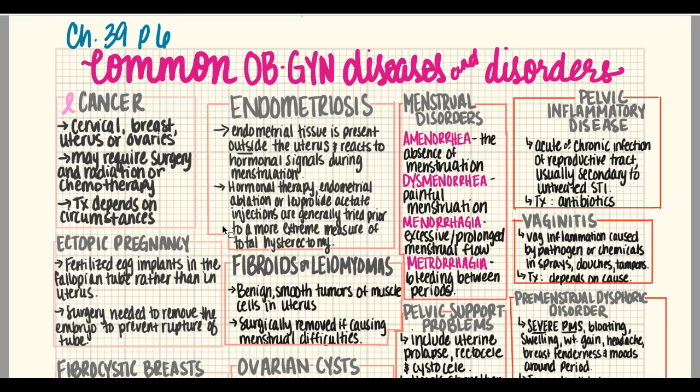Menstrual disorders include amenorrhea — the absence of menstruation, which can occur secondary to pregnancy or without it. Dysmenorrhea is painful menstruation. Menorrhagia is excessive or prolonged menstrual flow. Metrorrhagia is bleeding between periods. There are many causes for these disorders, including stress, anxiety, and infections, and treatment always depends on the cause.